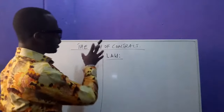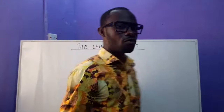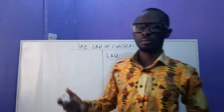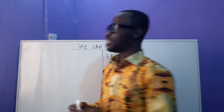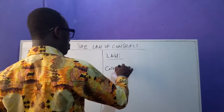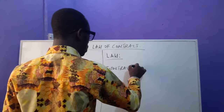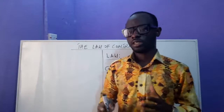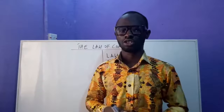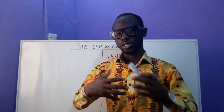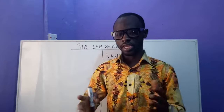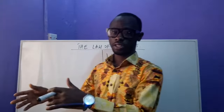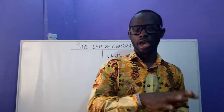Our topic here is the law of contracts. When we talk about the law of contracts, the second thing we need to discuss is what a contract is. In simple language, a contract is an agreement between two parties. For a contract to be valid, there has to be an agreement between two parties.